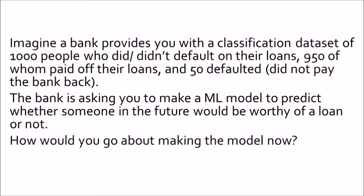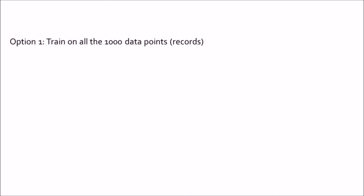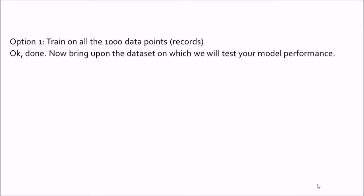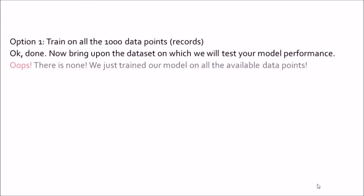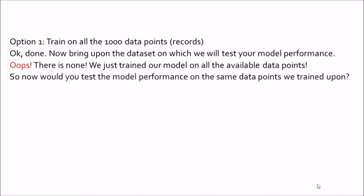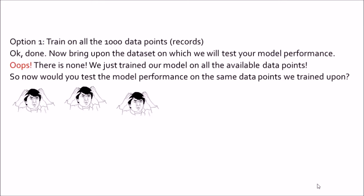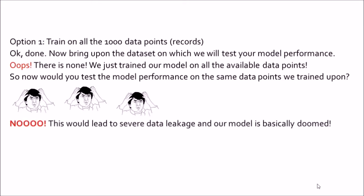So how do you go about making your model? I will give you three choices. Option 1: train on all the 1000 data points, where each data point is one record and each record is one person. Now it is time to bring up the test dataset — but there is none. We have just trained our model on all the available data points. So would you test your model performance on the same data points that we trained upon? No!